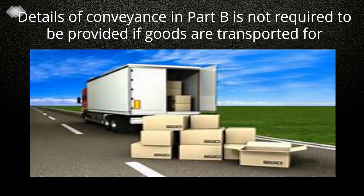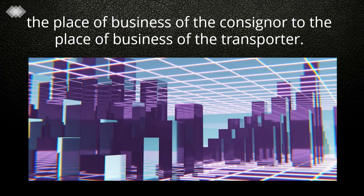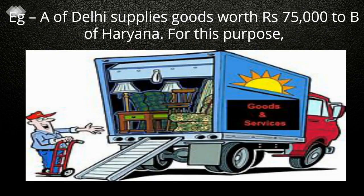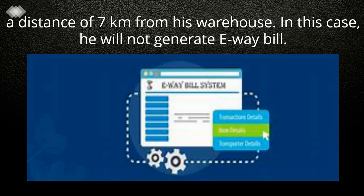When Details of Conveyance Are Not Required: Details of conveyance in Part B are not required to be provided if goods are transported for a distance of less than 10 km within the state or union territory from the place of business of the consigner to the place of business of the transporter. For example, A of Delhi supplies goods worth Rs. 75,000 to B of Haryana. He sends goods from his warehouse to the transporter's office, which is located 7 km away — in this case, he will not need to fill Part B.